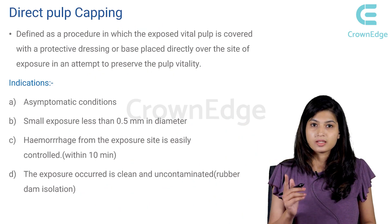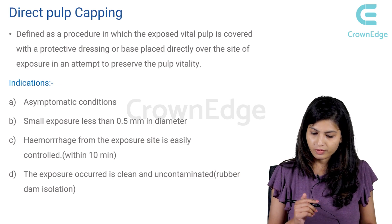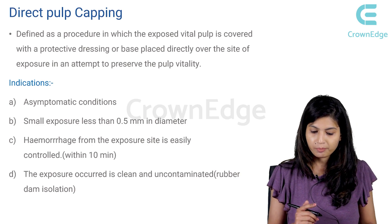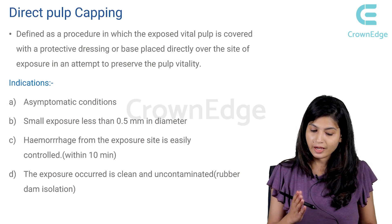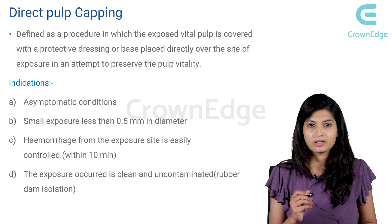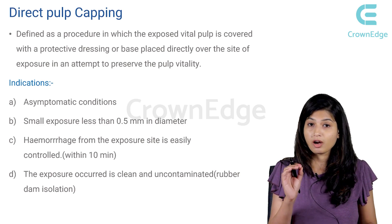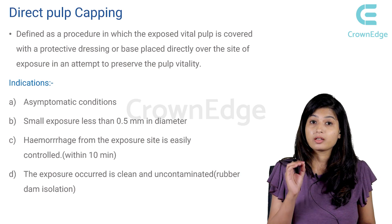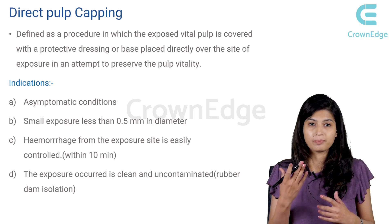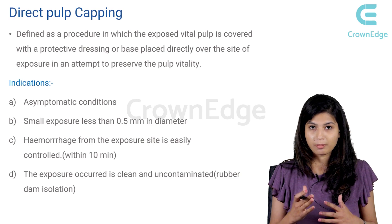Direct pulp capping can be defined as a procedure in which the exposed vital pulp is covered with a protective dressing or base placed directly over the site of exposure, in an attempt to preserve the vitality of the pulp. So if there is a pinpoint exposure, you are going to cover that small exposure with a protective dressing, and by covering it you are going to maintain the vitality of the pulp.